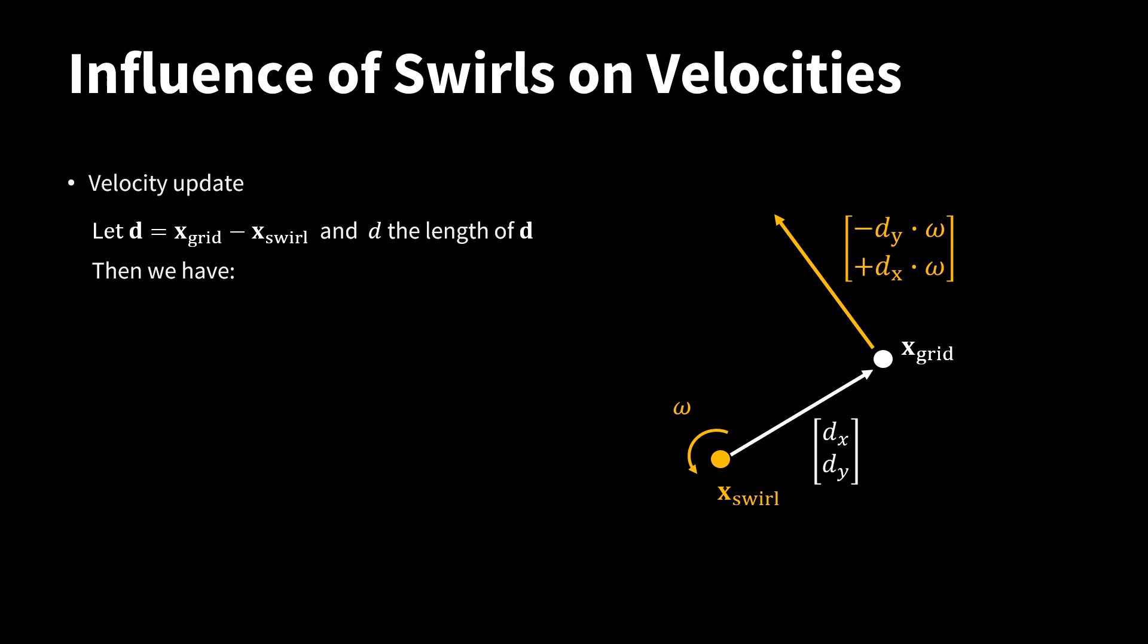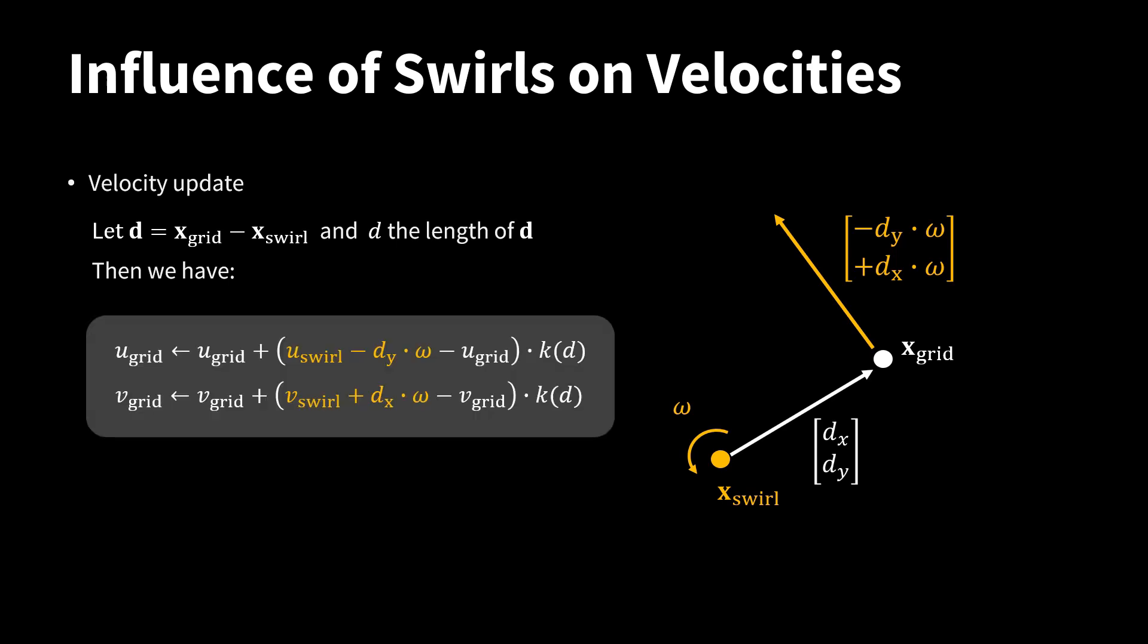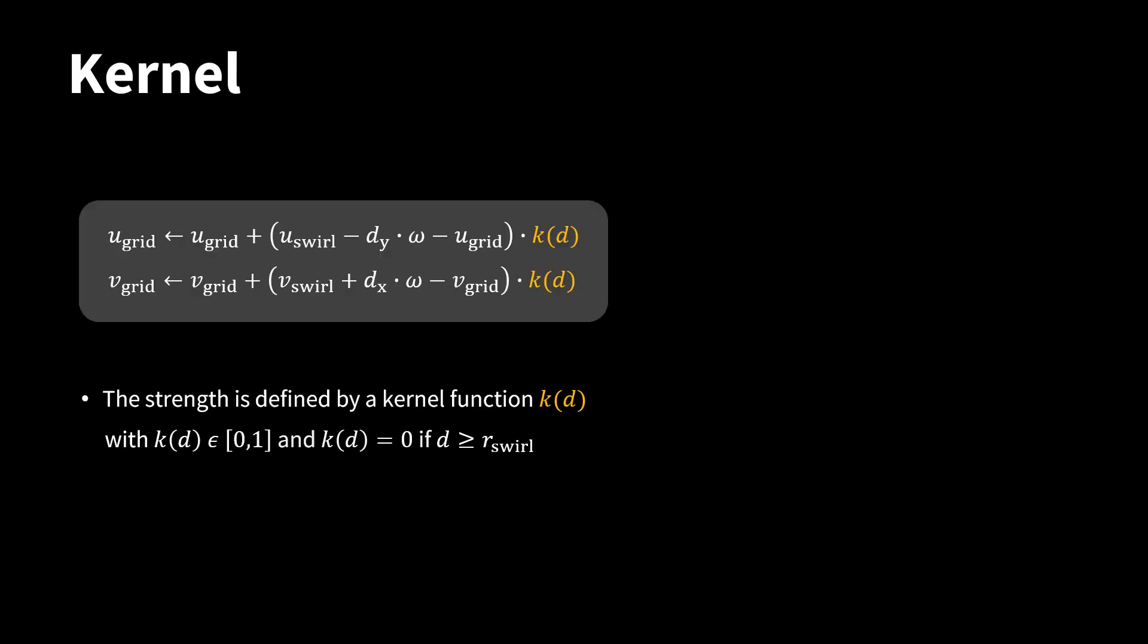Let me now show you how swirls influence the velocity field in the grid. Let's assume that we have a swirl at position x swirl and it influences a grid velocity component at position x grid. Let d be the vector between x swirl and x grid and d its length. We can now use these two statements to update the grid velocity components at x grid. The equations pull the current grid velocity components towards the swirl velocity at their locations.